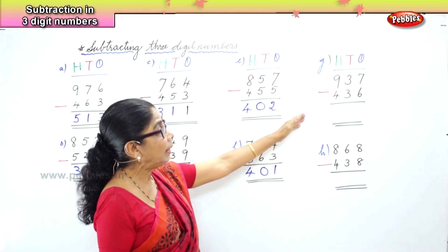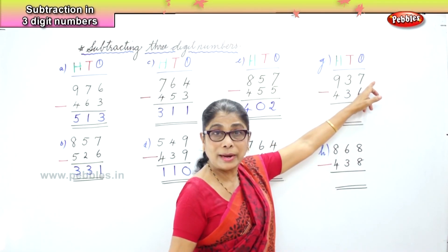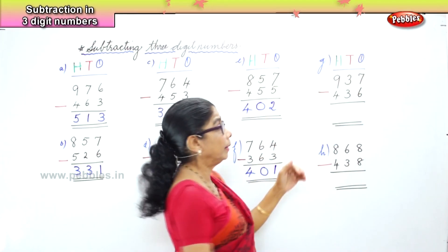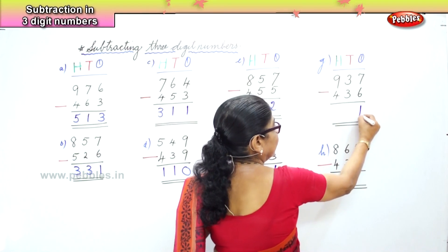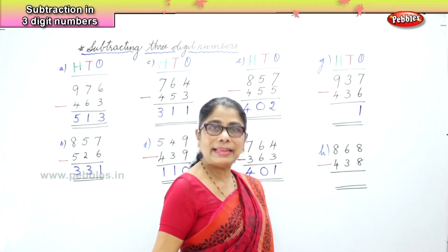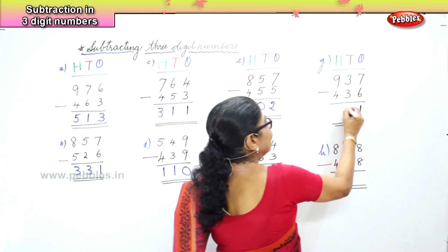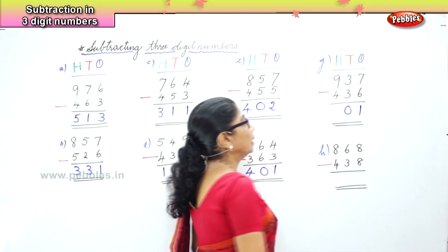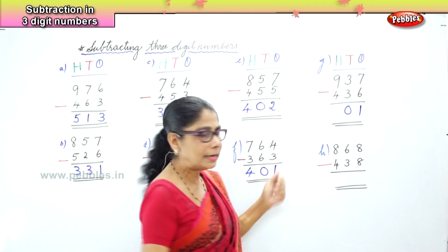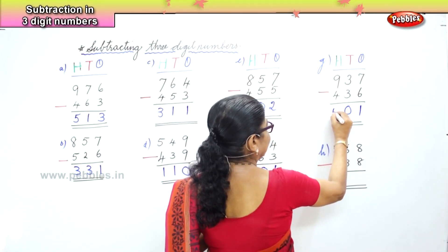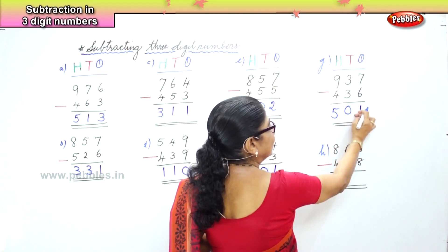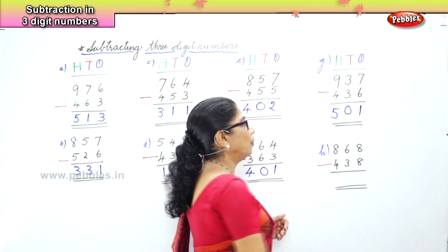Now let's look at another sum. In the 1s place, we have 7 ones minus 6 ones. 7 minus 6 is 1. In the 10s place: 3 tens take away 3 tens is 0. In the 100s place: 9 hundreds minus 400. 9 take away 4 is 5. So you have 7 take away 6 is 1, 3 take away 3 is 0, 9 minus 4 is 5. The answer is 501.